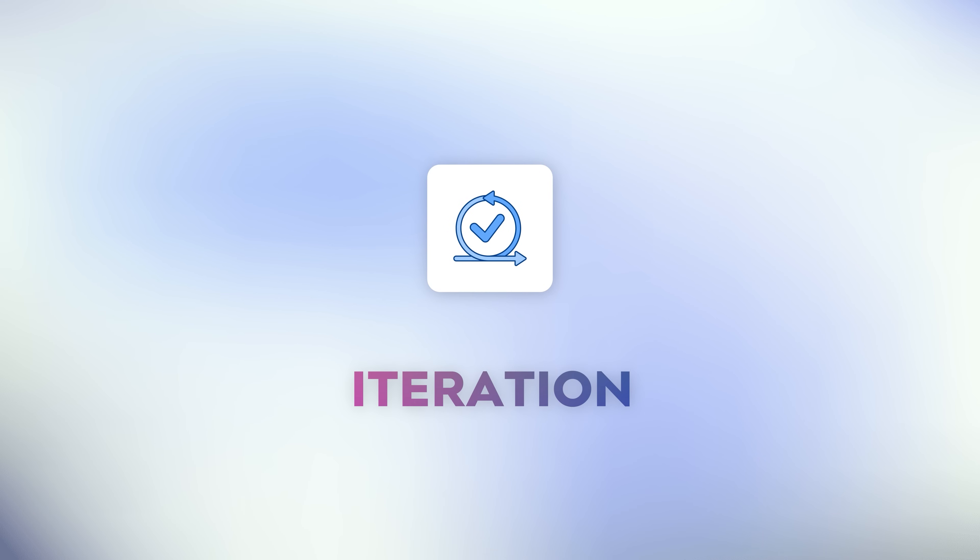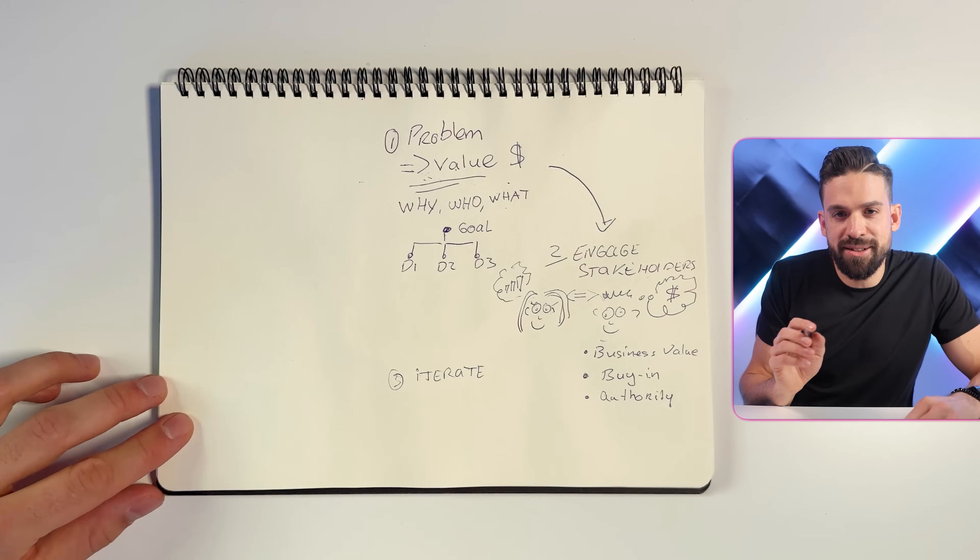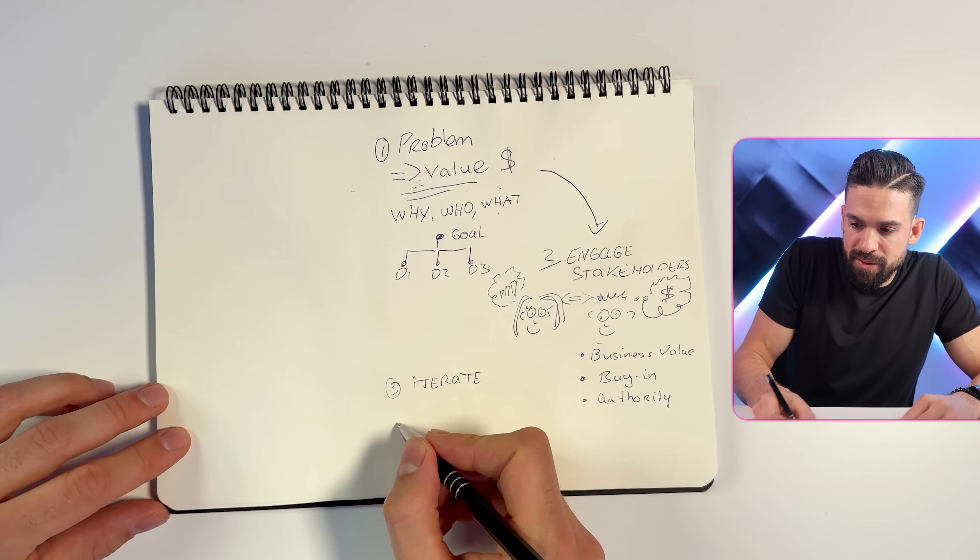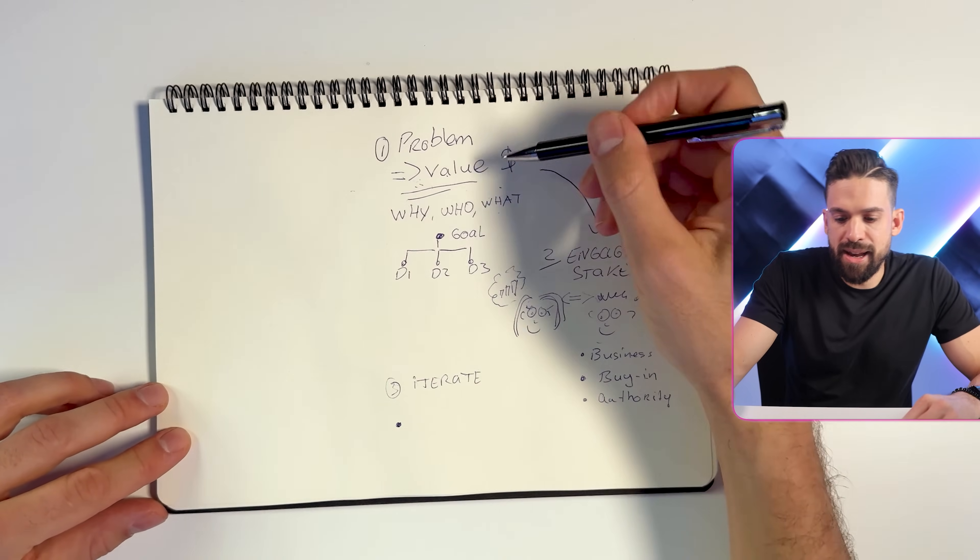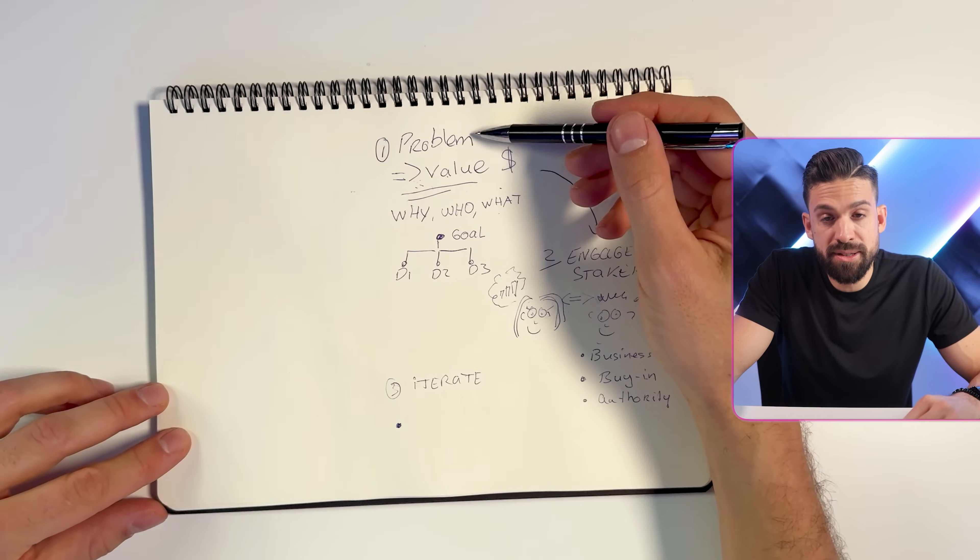Now that brings me to point number three: iterate. Iteration is often better than aiming to sprint to the finish line in one go. Now just imagine the following scenario. So let's say we are at the beginning, and you defined all of the requirements.